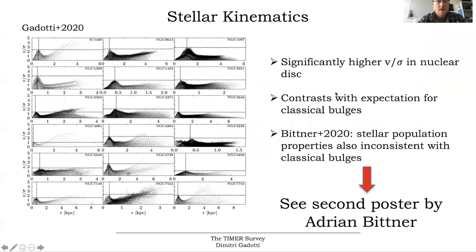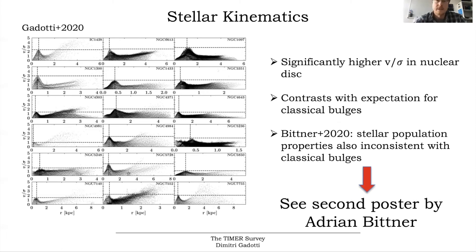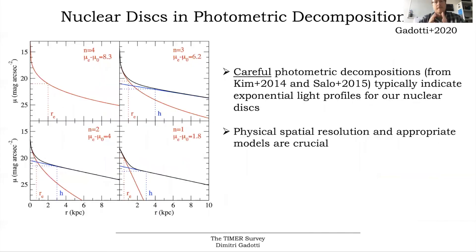Here I show radial profiles of v/sigma for most galaxies in our sample. You can see a signature of the main disk with elevated v/sigma values, and then a secondary peak of v/sigma close to the center, which is basically the nuclear disk. This peak allows us to define a kinematic radius for the nuclear disk — the radius at which v/sigma peaks. These high v/sigma values contrast with the expectation for classical bulges. We also studied in Bittner et al. 2020 the stellar population properties of these nuclear disks, which are also inconsistent with classical bulges — he has a poster about this paper in the conference.